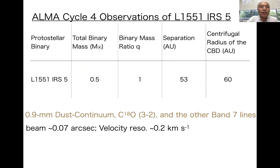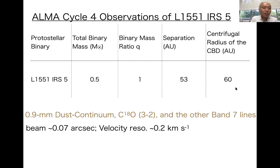Our target is the Class I protostellar binary L1551-IRS5. This table shows the properties of our target. The total binary mass is 0.5 solar masses, the binary mass ratio is unity, and the radius of the circumbinary disk is 60 AU. We observed this protostellar binary with ALMA in 0.9 mm dust continuum emission, C18O 3-2, and other Band 7 lines. The angular resolution is 0.07 arcseconds and the velocity resolution is 0.2 km/s.